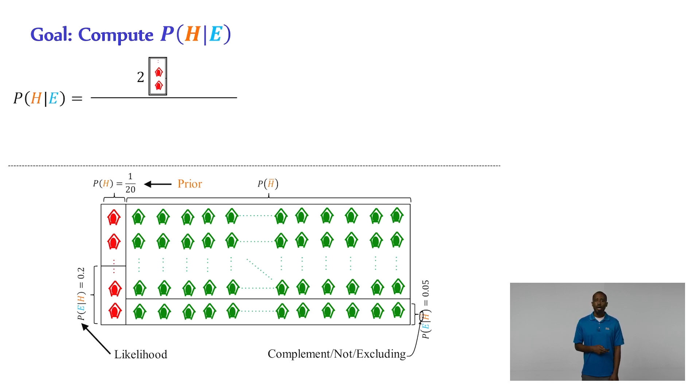And that number was divided by the total number of buildings that fit the evidence, or the total number of collapsed buildings in our sample space. And that number was 12.